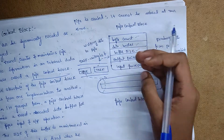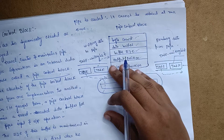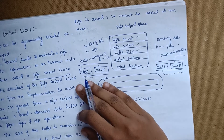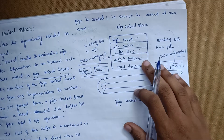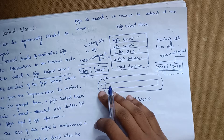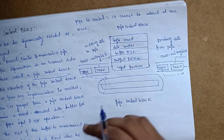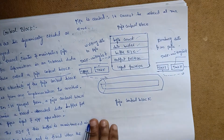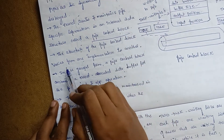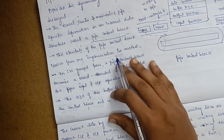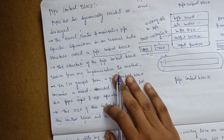For example, for the first pipe control block we look at the main definition and choose PCB. This diagram shows the structure for 2-mark and 5-mark answers. The fields include byte count, data buffer, and buffer size. The structure of the pipe control block varies from one implementation to another — the structure of one pipe differs from another.